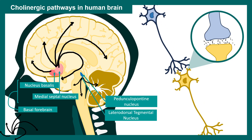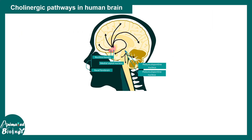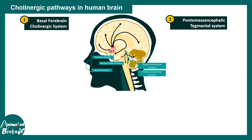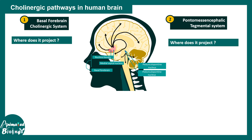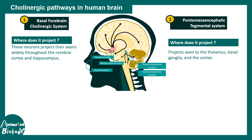Now we are going to focus on the synapse and see the mechanism of neurotransmission in a bit more detail. But first, a quick summary: there are the basal forebrain cholinergic system and the pontomesencephalic tegmental cholinergic system — these are the two principal cholinergic systems in the human brain. The first projects to several regions in the cortex and hippocampus; the second projects to the thalamus, basal ganglia, some portions of the cortex, and the cerebellum.